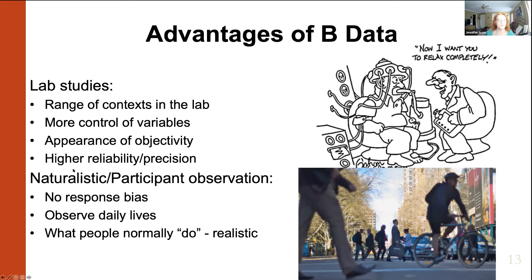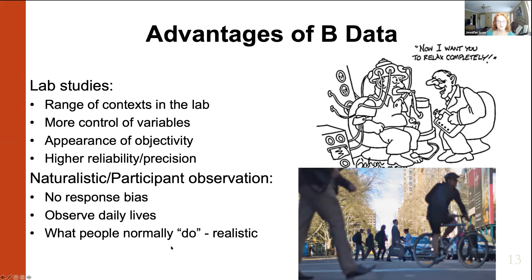The difference between naturalistic observation and participant observation is that a participant observer actually becomes part of the setting and is there long enough that the people being observed don't notice them after a while. One thing you don't have to deal with in behavioral data is response bias — people doing things because they know you're watching and want to look good. You can observe people as they normally interact in their daily lives, and it tends to be more realistic.